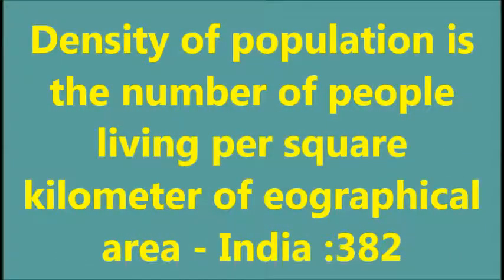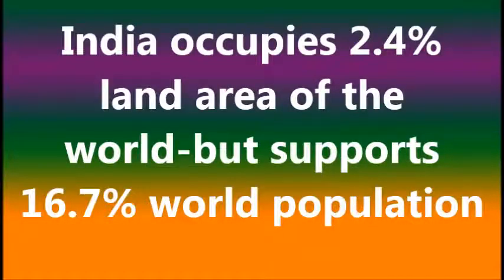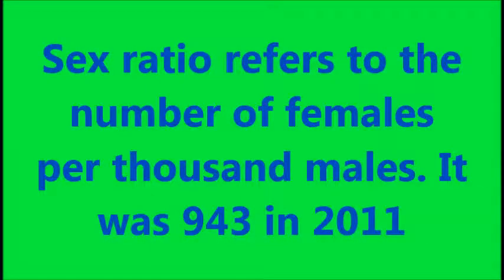The number of people living per square kilometer of geographical area is called density of population. India is one of the most densely populated countries in the world, with 382 persons per square kilometer in 2011. India occupies 2.4% of the total land area of the world but supports 16.7% of the total world population. The sex ratio, which refers to the number of females per 1,000 males, was 943 in 2011, which is unfavorable to females.